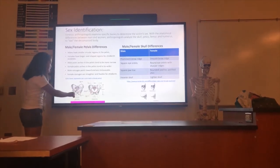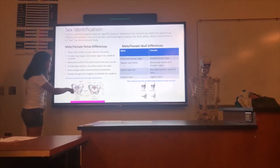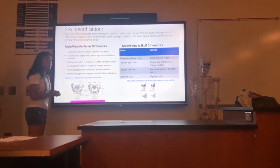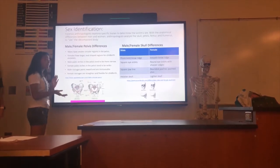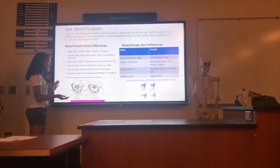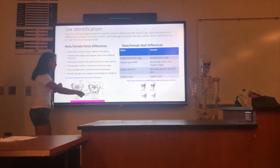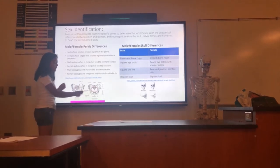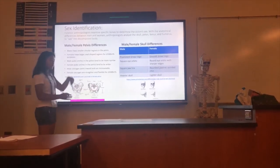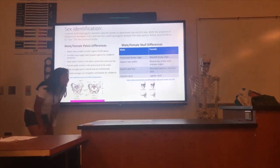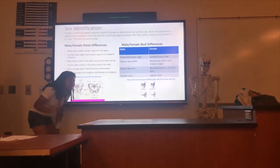The tailbone in males is not flexible — it points inward and just doesn't move. Females have a very flexible tailbone, and it's straight, going straight down. And then for skull differences.